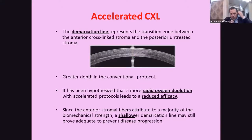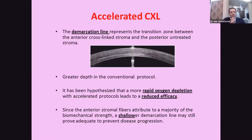Since the anterior stromal fibers contribute to the majority of the cornea's mechanical strength, a shallower demarcation line may still provide adequate effect to prevent disease progression.